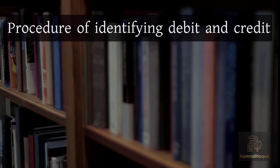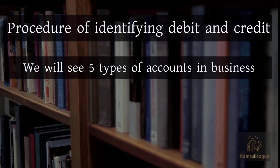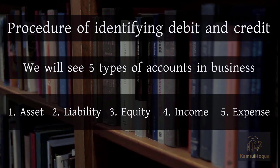Procedure for Identifying Debit and Credit: We will see five types of accounts in business. Every transaction will fall into one of these five categories: Asset, Liability, Equity, Income, and Expense.